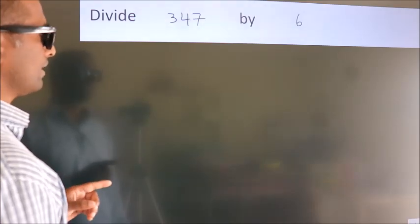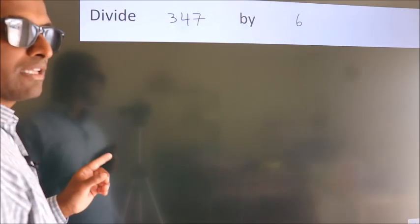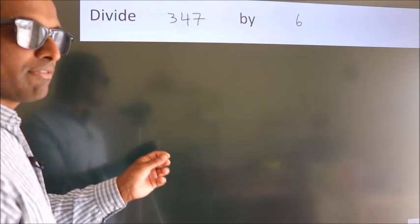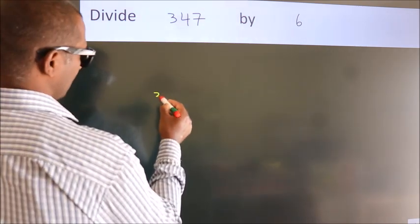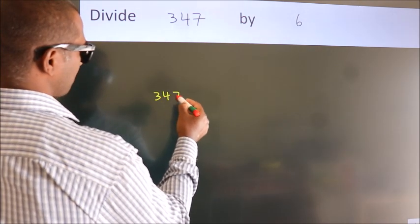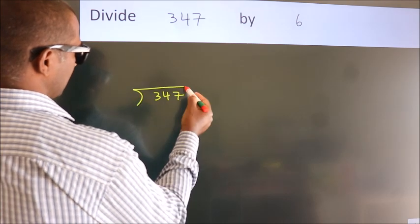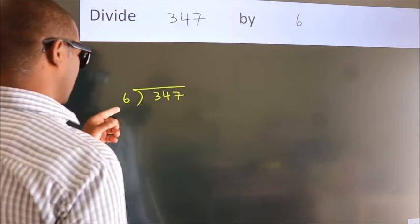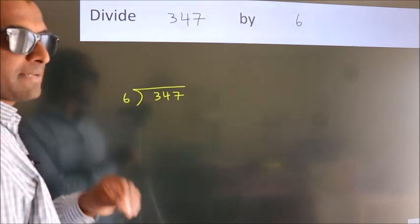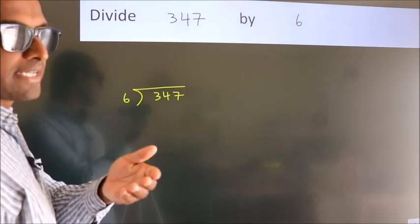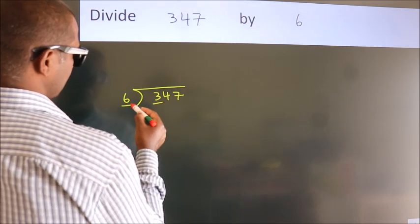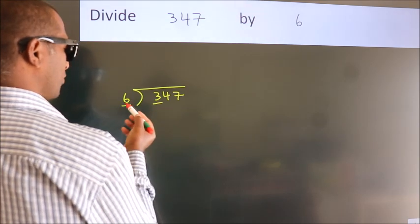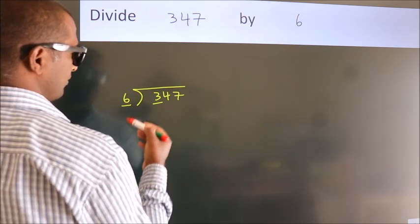Divide 347 by 6. To do this division we should frame it in this way: 347 here, 6 here. This is your step one. Next, we have 3 here. 6, 3 is smaller than 6, so we should take two numbers: 34.